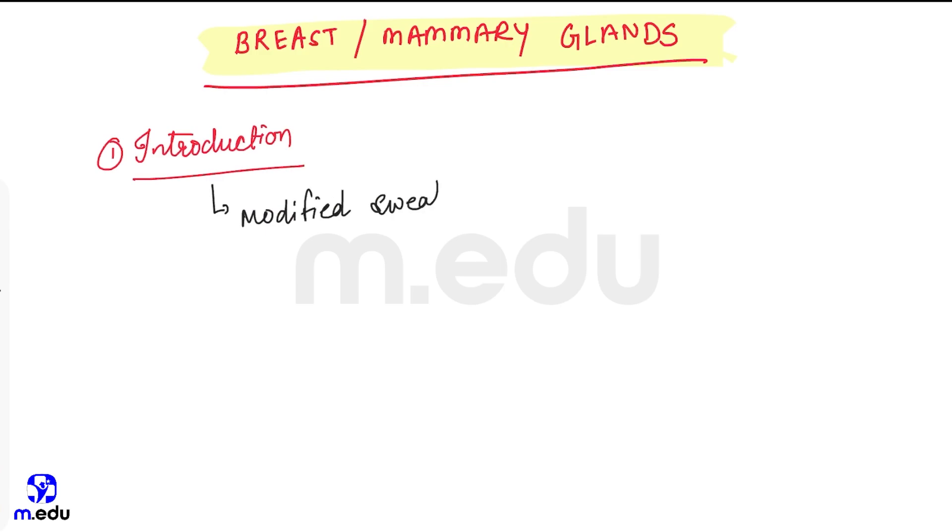The second heading: the situation. Where is breast situated? It lies in superficial fascia of pectoralis, of pectoral region. It lies in superficial fascia of pectoral region.